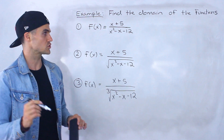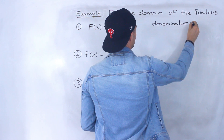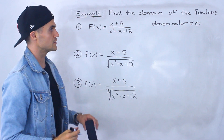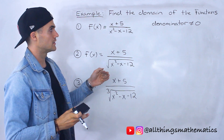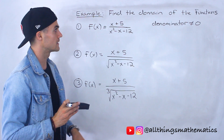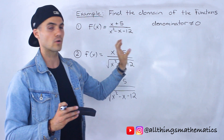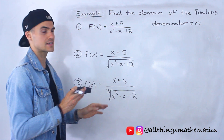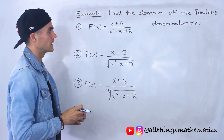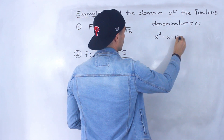Starting with number one, we have f of x equals x plus 5 over x squared minus x minus 12. With rational functions, the denominator can never equal zero, because if the denominator equals zero at a certain x value, the function would be undefined — we'd have a number divided by zero, or sometimes zero divided by zero if the numerator is also zero at that x value. So we need to figure out when x squared minus x minus 12 equals zero.